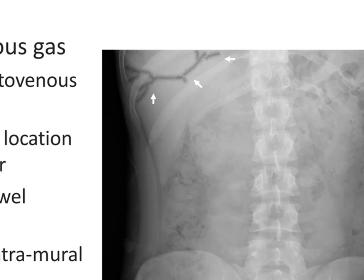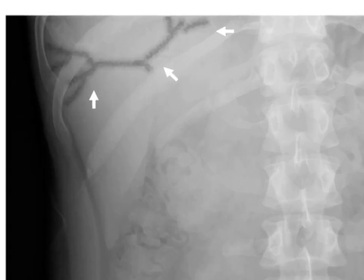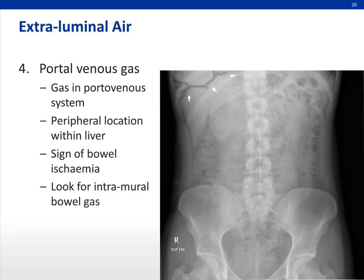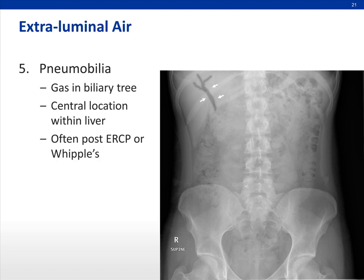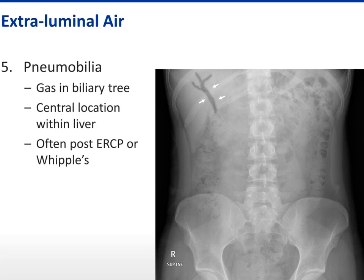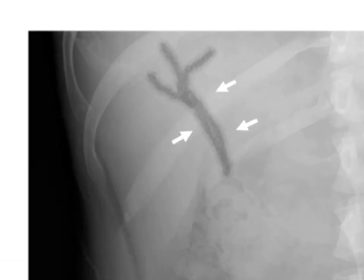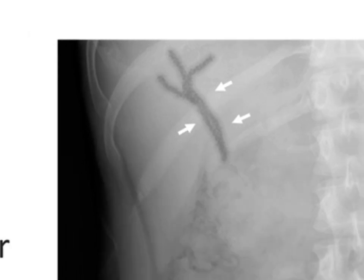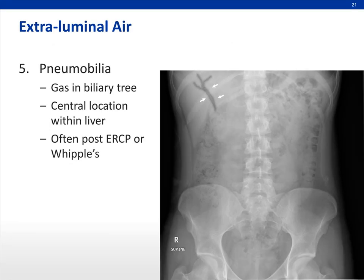Next, we have portal venous gas — tubular gas-like lucencies with a branching pattern extending all the way out to the periphery within the liver. This is a sign of bowel ischemia. It can be mistaken for pneumobilia, which is gas within the biliary tree, as both appear as tubular branching gas lucencies. However, pneumobilia is usually central in location, as opposed to portal venous gas which extends out to the periphery.